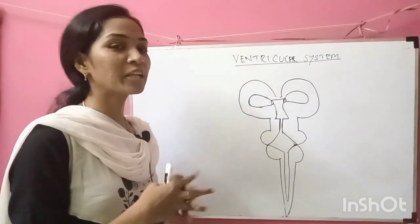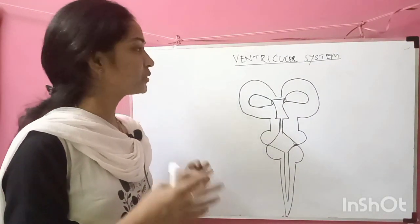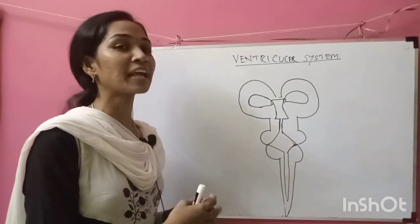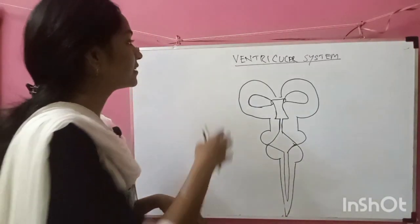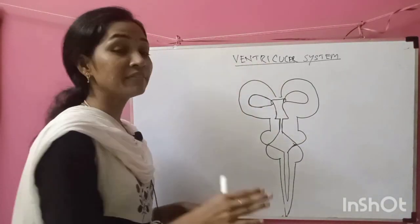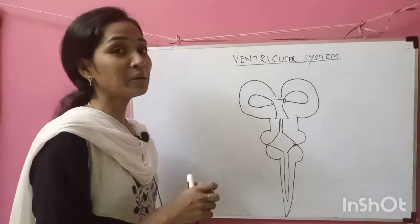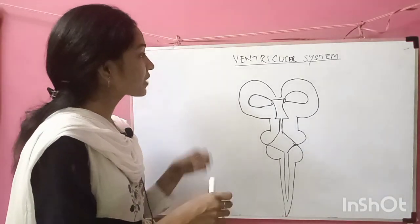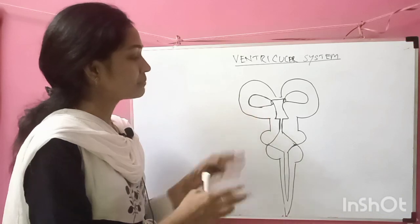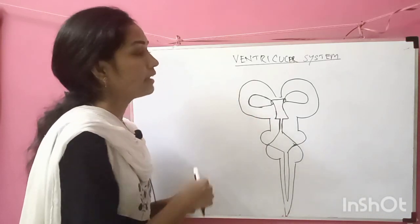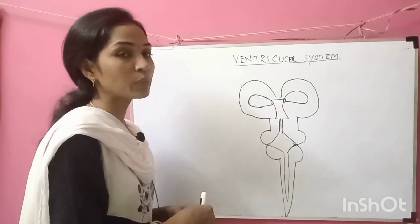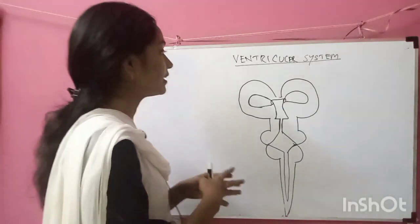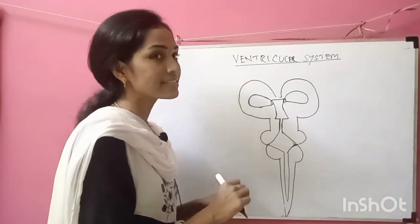Good morning everyone. Today we are going to discuss a very interesting and important topic: the ventricular system. In this system we are going to discuss how CSF is produced in the central nervous system, how it circulates, and how it drains into the superior sagittal sinus.